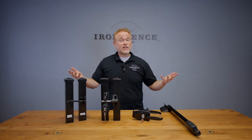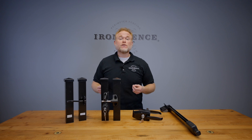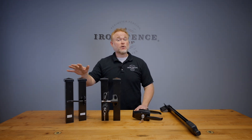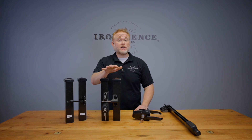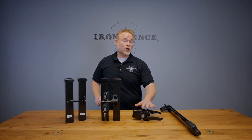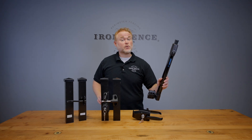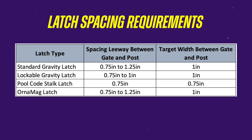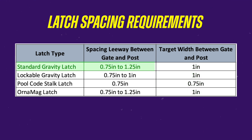Now let's identify which gate latch or latches you have. There are typically four different types: our standard simple gravity latch, a key-lockable version of the gravity latch that can be one or two-side key lockable, the Ornamag latch, and the stock style swimming pool code latch. The latch table shows the spacing requirements — the first column shows the range of adjustability, and the second column is the target width for your calculation. For example, the standard gravity latch can have a spacing as tight as three-quarter inch to as wide as one and a quarter inches, with a target width of one inch.